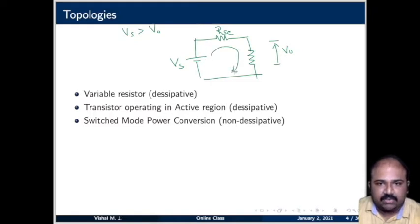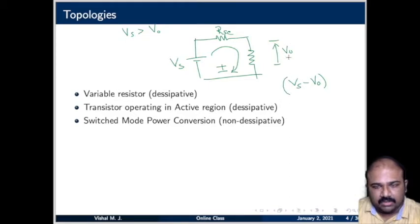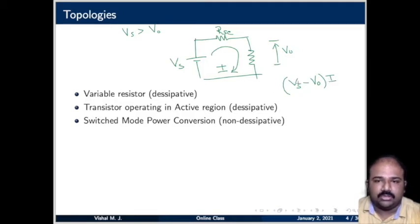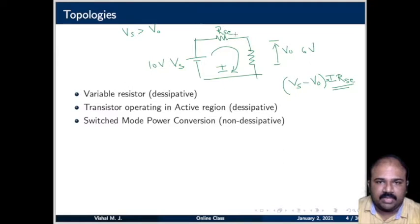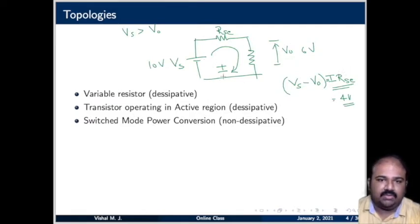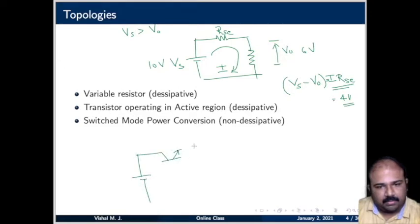If I is the current flowing through the circuit, we design it such that VS minus V0 equals I times R_SC — the surplus voltage is dropped across the series resistance. For example, if VS is 10 V and V0 is 6 V, we choose R_SC such that I times R_SC equals 4 V. This is a series dissipation approach. Similarly, instead of a resistor, we can have a transistor.